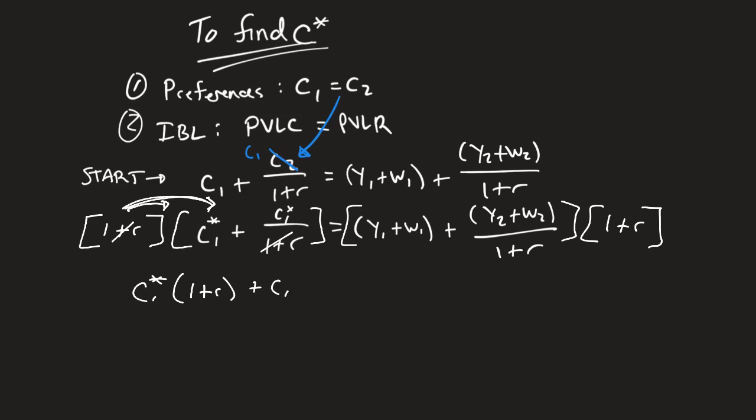On the right-hand side, I'm going to distribute through as well. So we're going to distribute through to both of these. So we're going to get Y1 plus W1 times 1 plus R plus, this is going to cancel on that one, plus Y2 plus W2. Remember this.